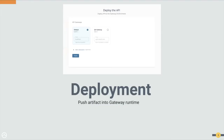Deployment is pushing the API into the runtime gateway environment. The above picture shows the deployment menu with multiple gateway environments in which API developers can select and deploy the API.